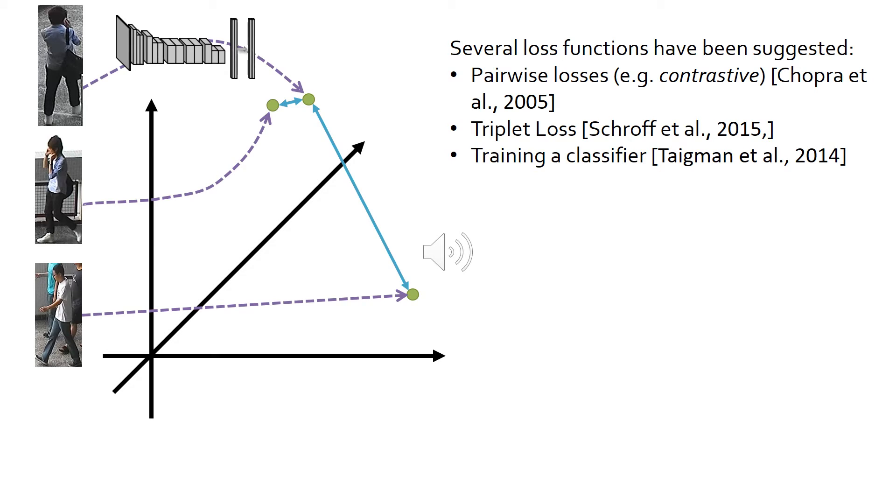The success of the embedding learning process very much depends on the loss functions. Some systems use pairwise loss functions, which score positive and negative pairs separately. Some use losses that consider triplets of examples.